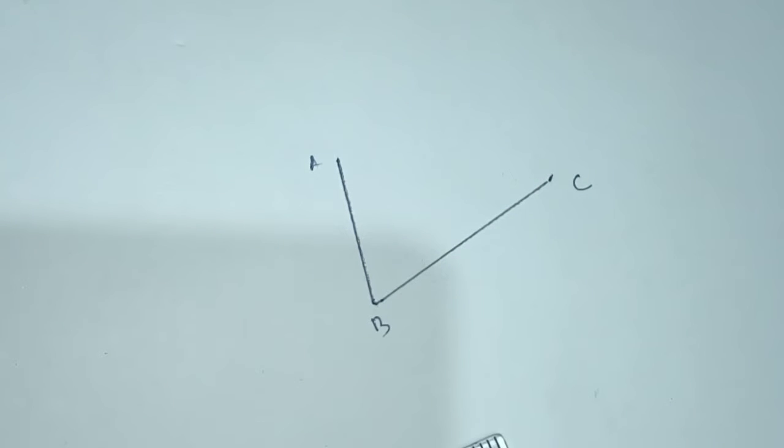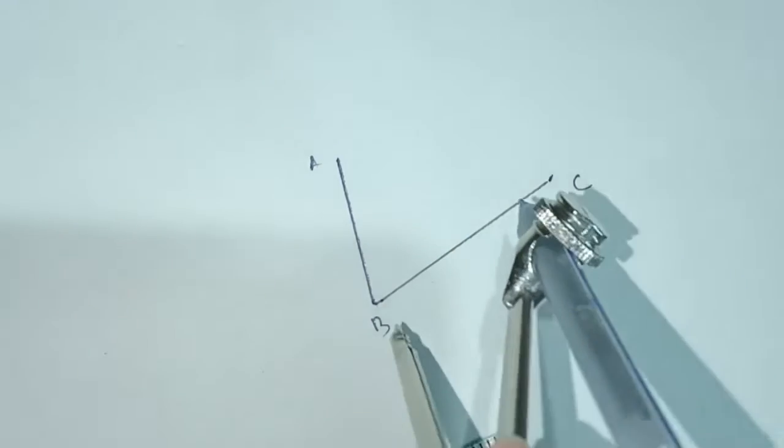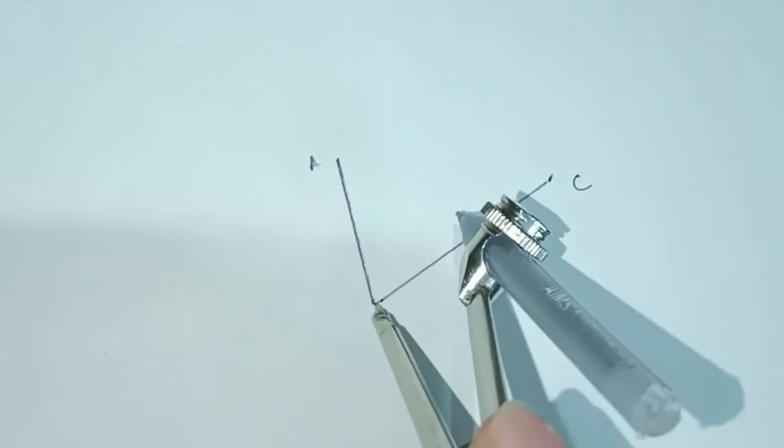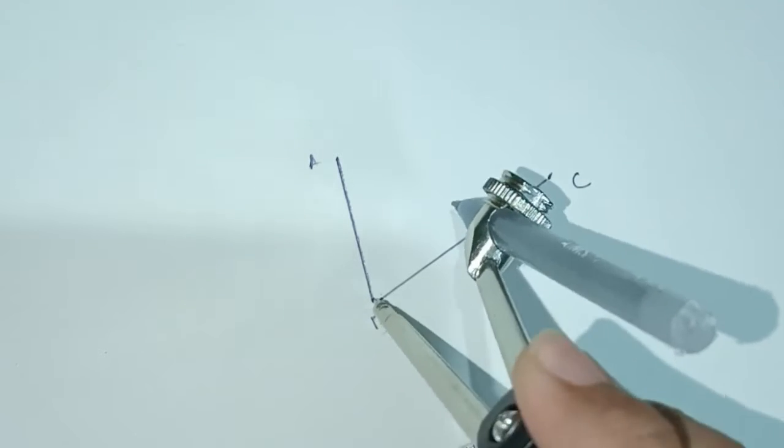Now we'll take two perpendicular bisectors: one from AB and another from BC. That means we need perpendicular bisector of BC and perpendicular bisector of AB. Let's take more than half - take the arc on both sides of BC.